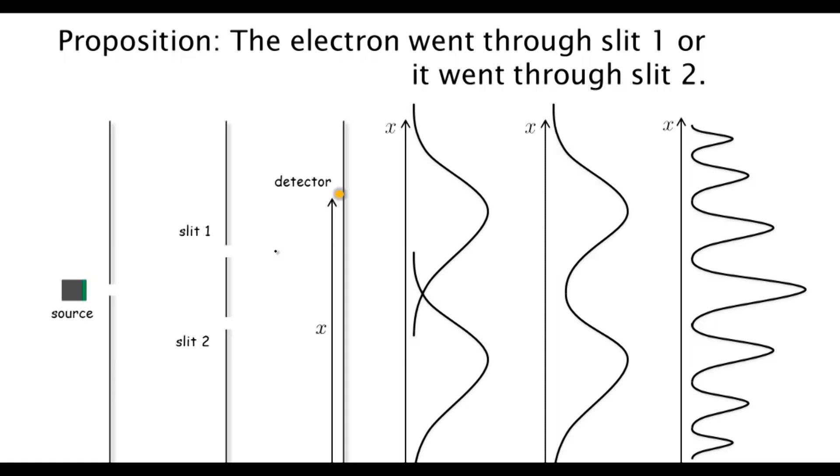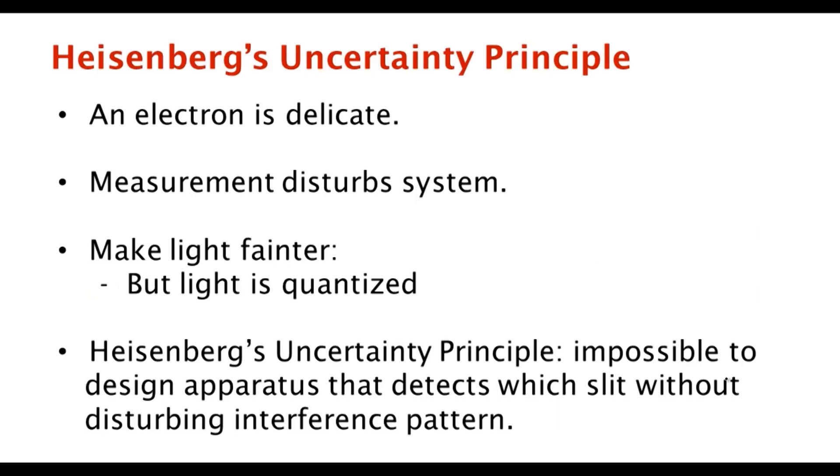Some of the time we can detect the electrons going through slit 1, sometimes through slit 2, and sometimes we don't detect them at all. What do we see in terms of the probability with which the electron is detected at X? We see exactly that same combination of this curve—the interference curve—and this curve. In other words, the electrons that we detect—if we detect which slit it went through, those add up just like this. If we do not detect which slit it went through, then it creates an interference pattern.